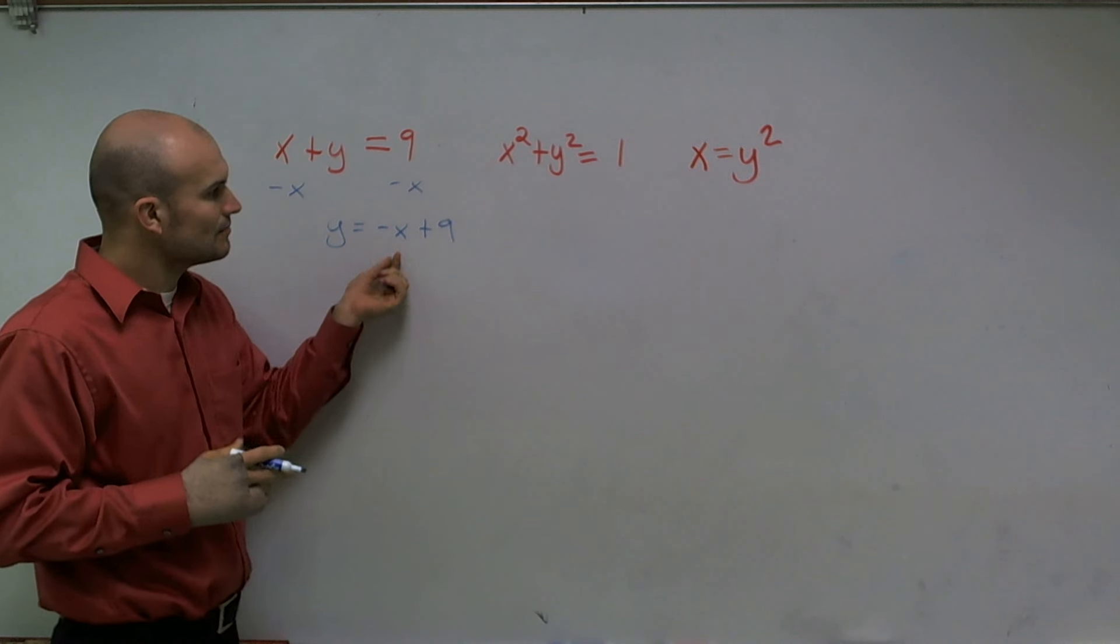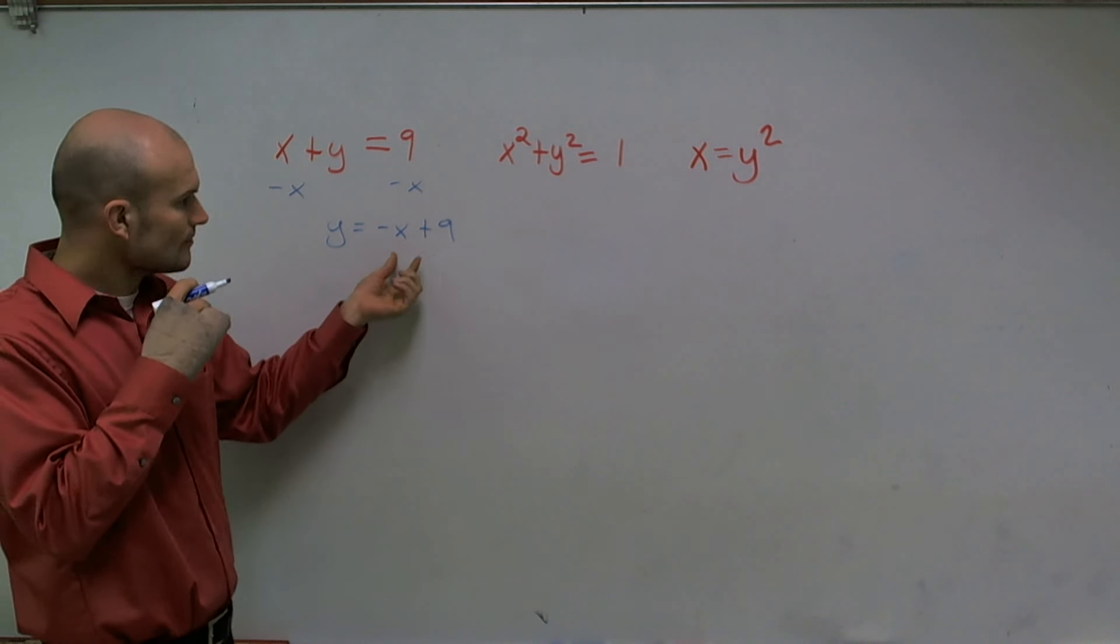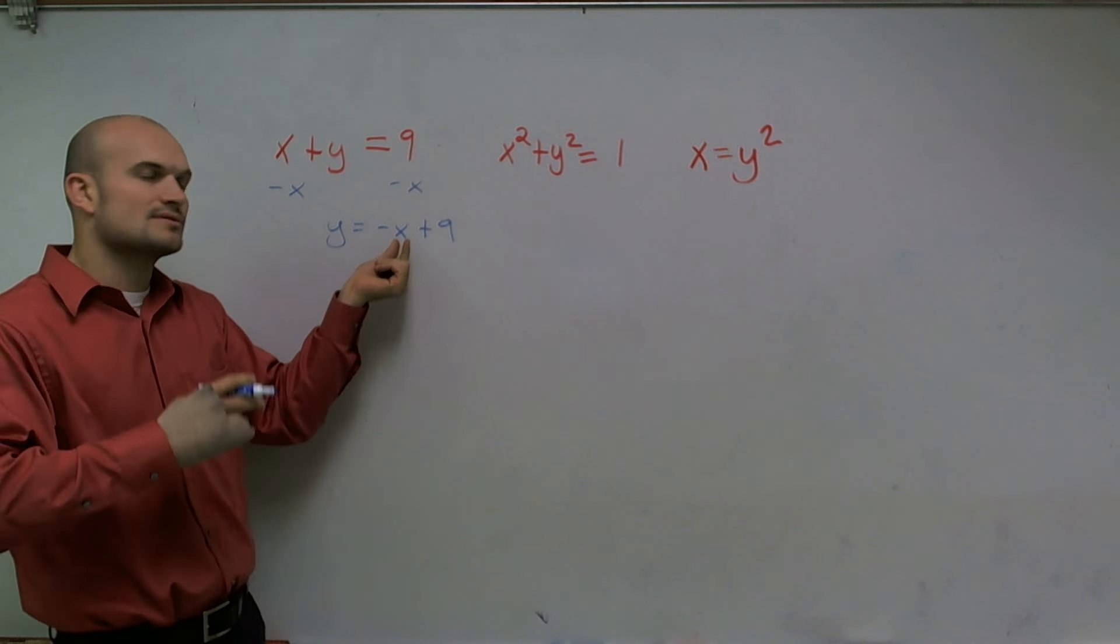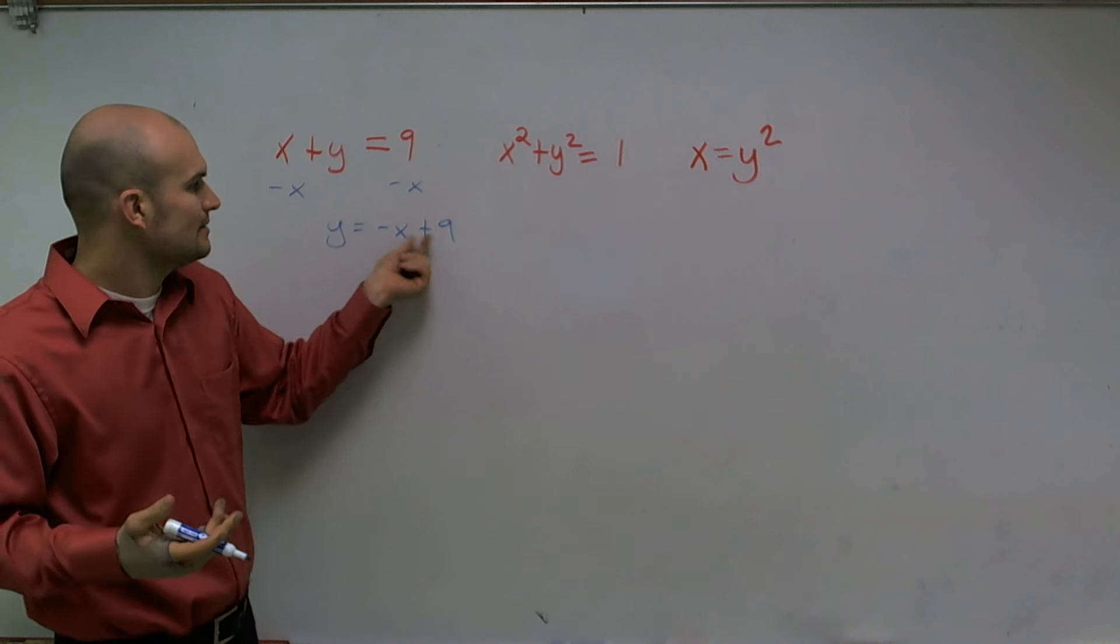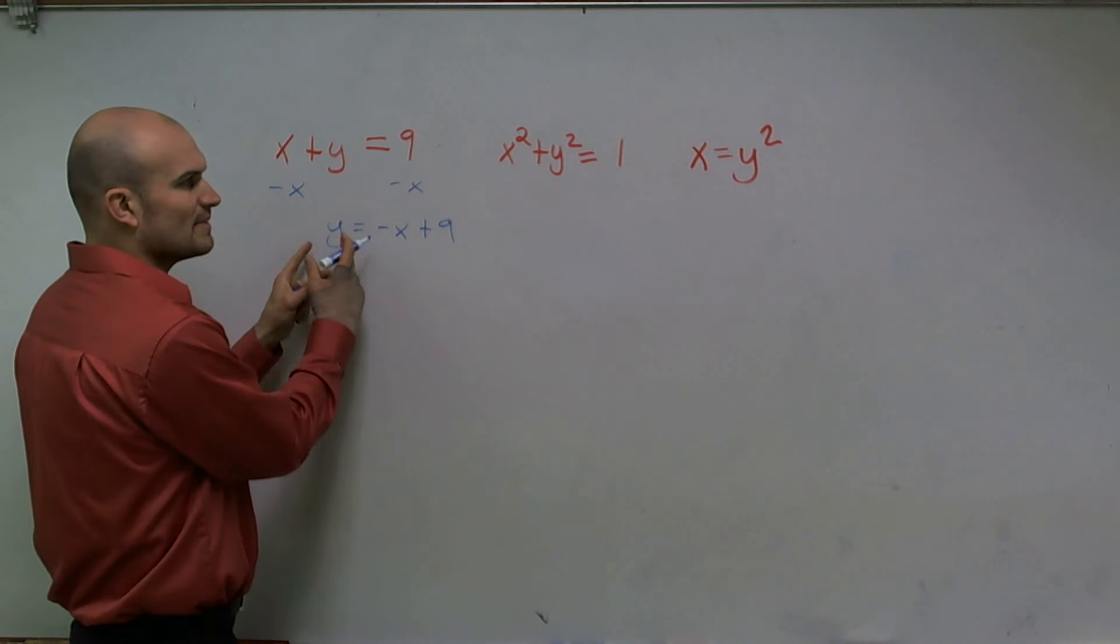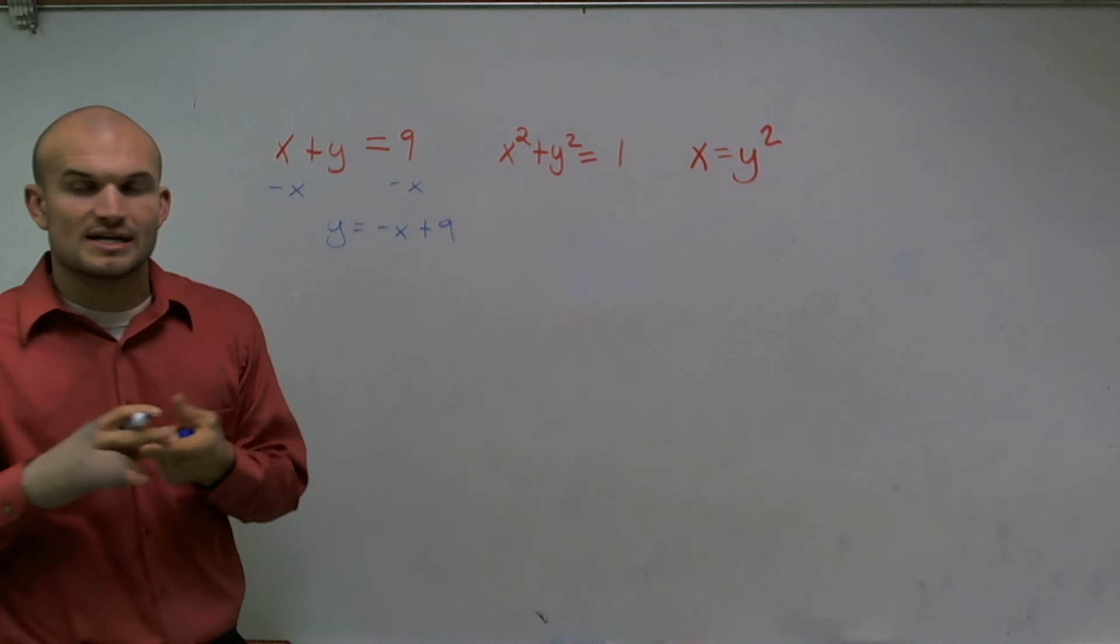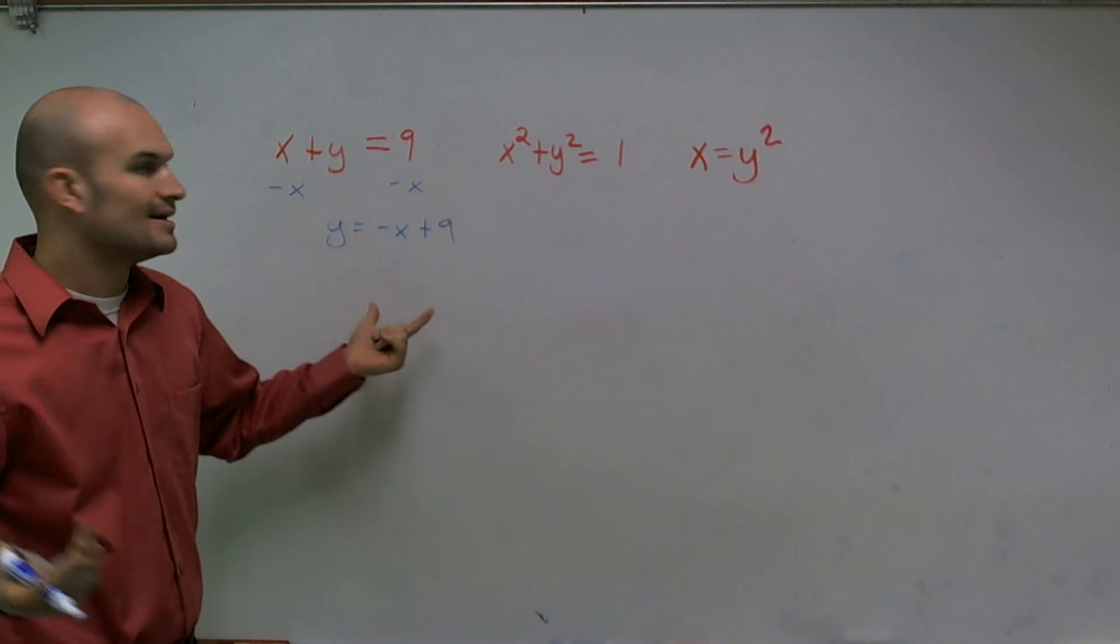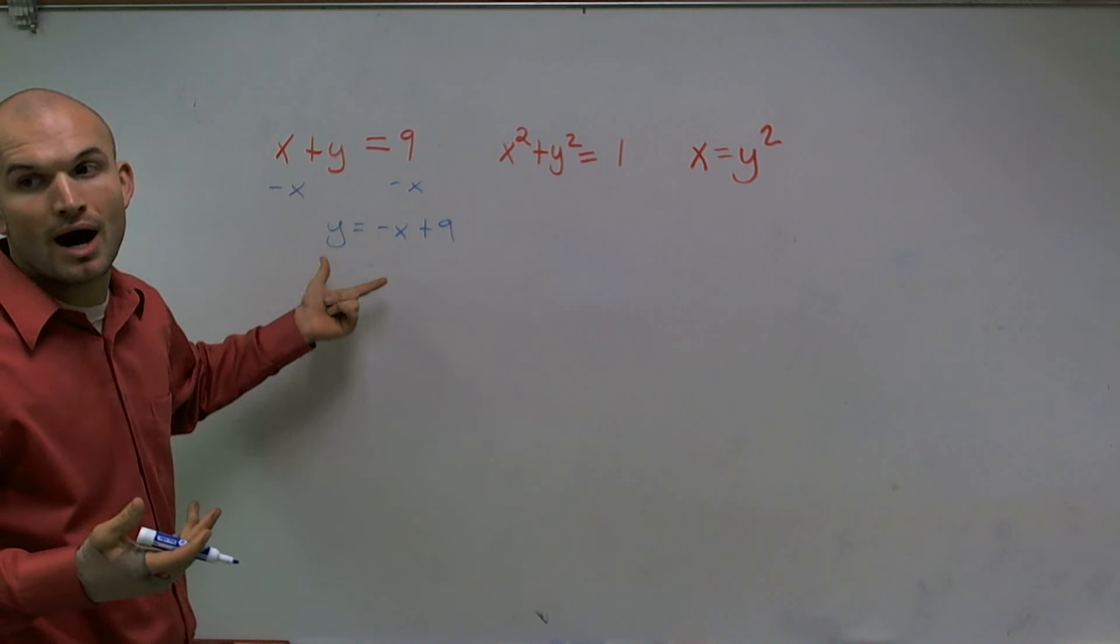What this tells me now is for every X I have a unique Y, because if X equals one, I'm going to add nine to it and I get eight. But every single term is unique for my Y. So since my output has unique terms for every input X, this is a function of Y in terms of X.